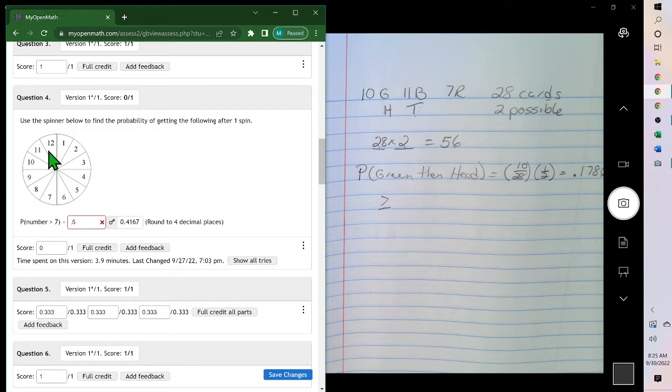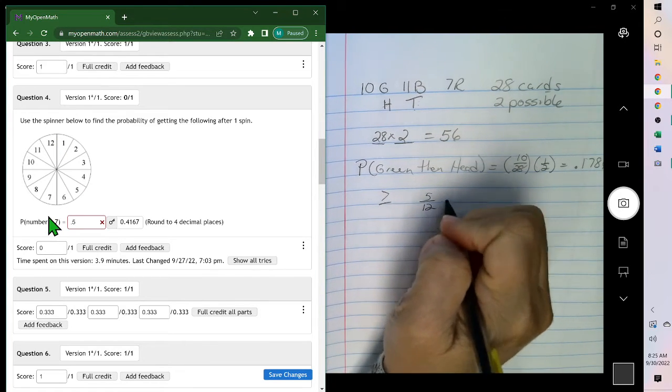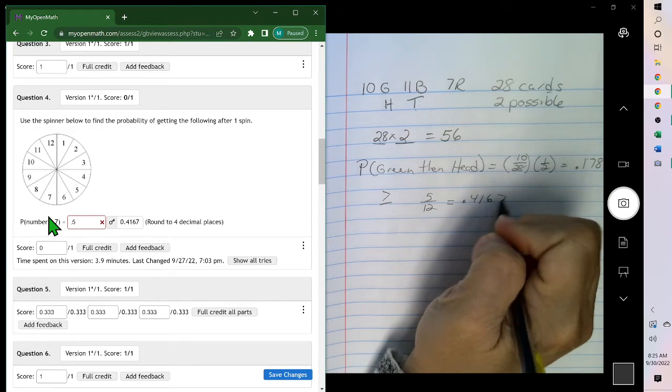Since we're not including it, it's the 8, 9, 10, 11, and 12, which is 1, 2, 3, 4, 5 out of the 12. So it would be 5 twelfths, which is 0.4167.